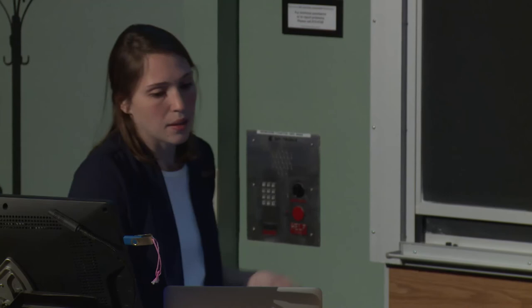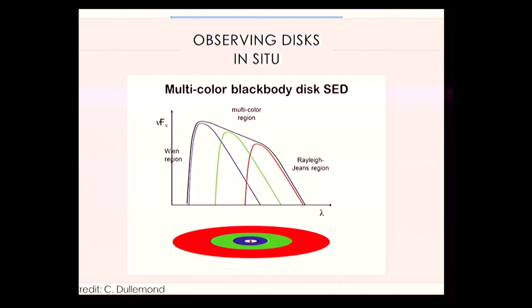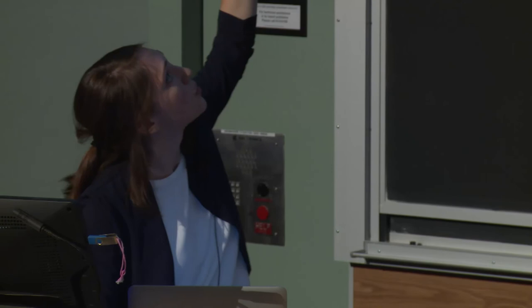We've known disks exist around young stars for at least 40 years, but we couldn't take pictures of them. We saw that the star itself had a blackbody-like spectrum, and as you have a blackbody going from high to low temperature, the blackbody radiation peaks at progressively redder wavelengths and is fainter. Blackbodies of very hot things like stars peak at blue wavelengths and are bright, while blackbodies from cooler dust grains peak at redder wavelengths and are fainter.